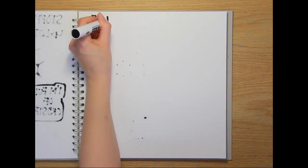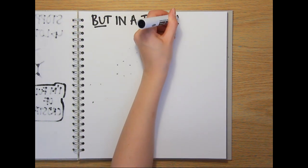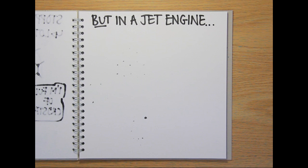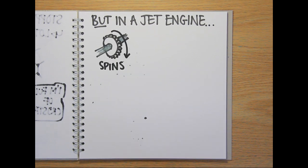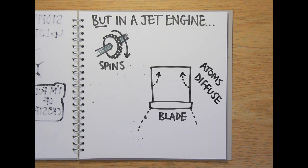However, at the high temperatures found in a jet engine, these grain boundaries can be a problem. As the turbine spins at high speed, atoms in the alloy can diffuse through the lattice to the outer edge,